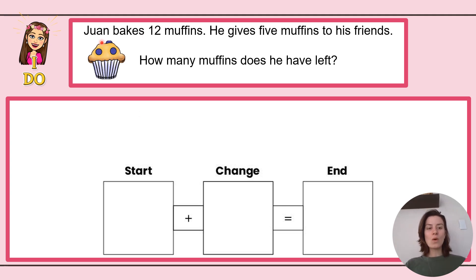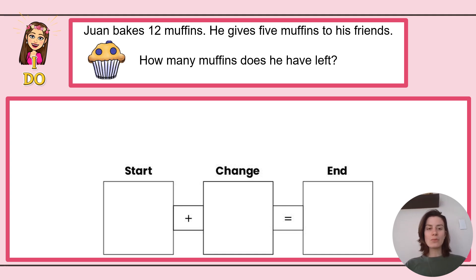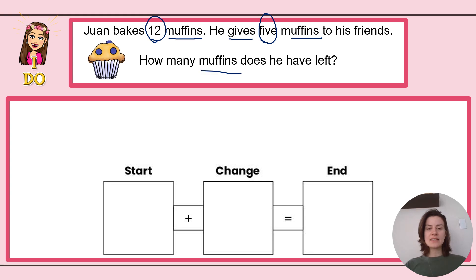So let's go ahead and read the problem. Juan bakes 12 muffins. He gives five muffins to his friends. How many muffins does he have left? In Step 1, understand it, I also want to underline or circle what is important — what I know, and what I need to find out. I know that Juan bakes 12 muffins, he gives five muffins to his friends, and my question is: how many muffins does he have left?